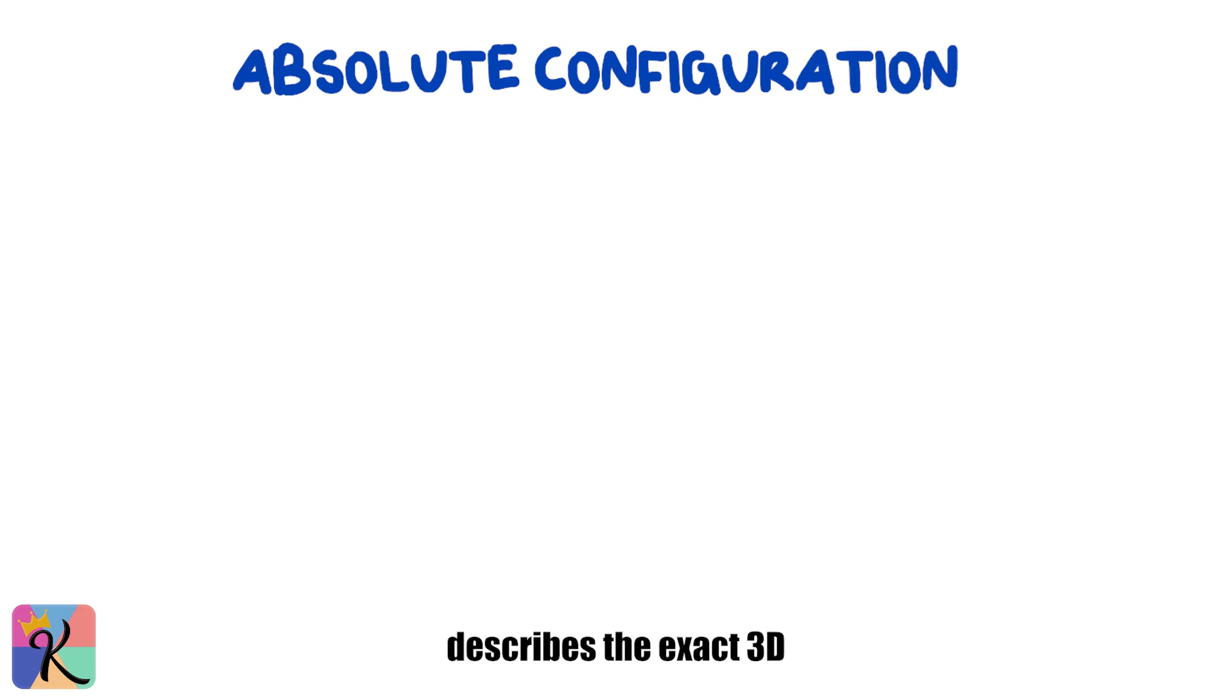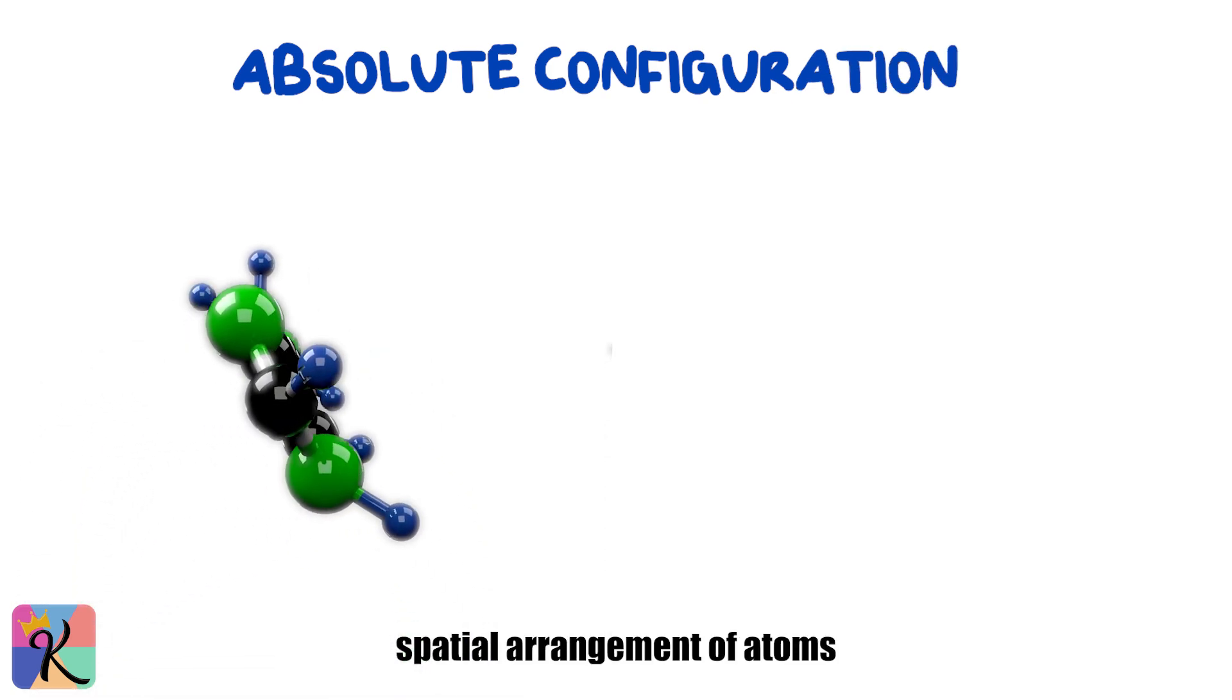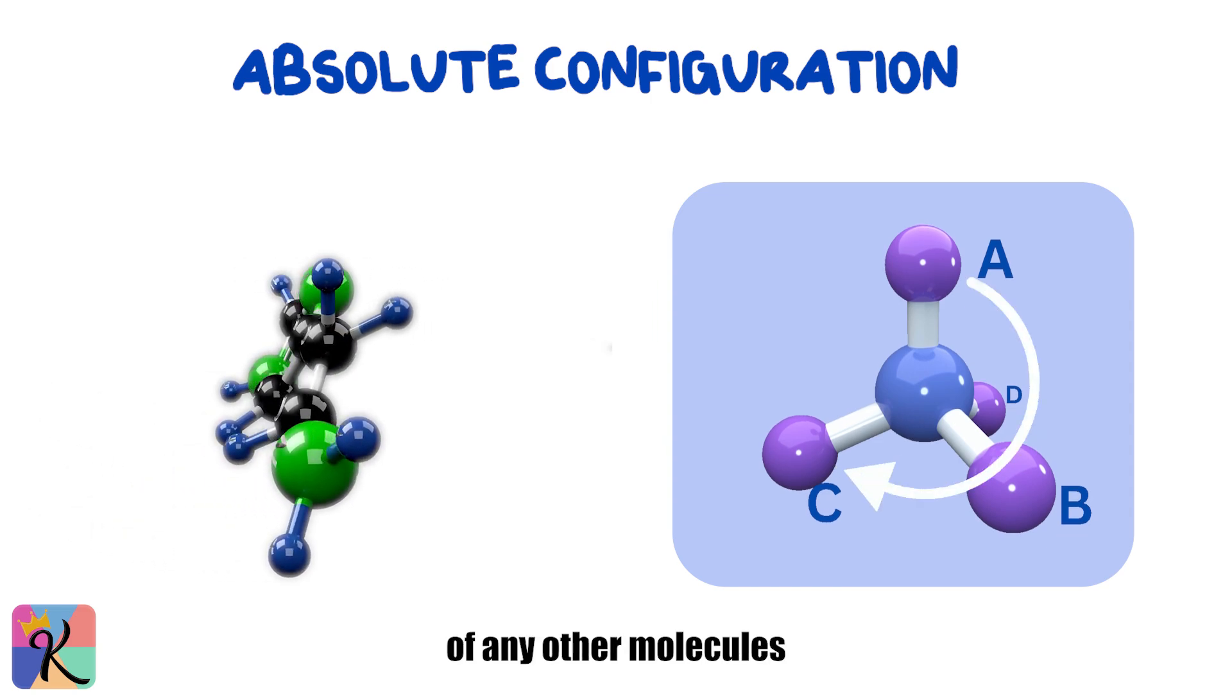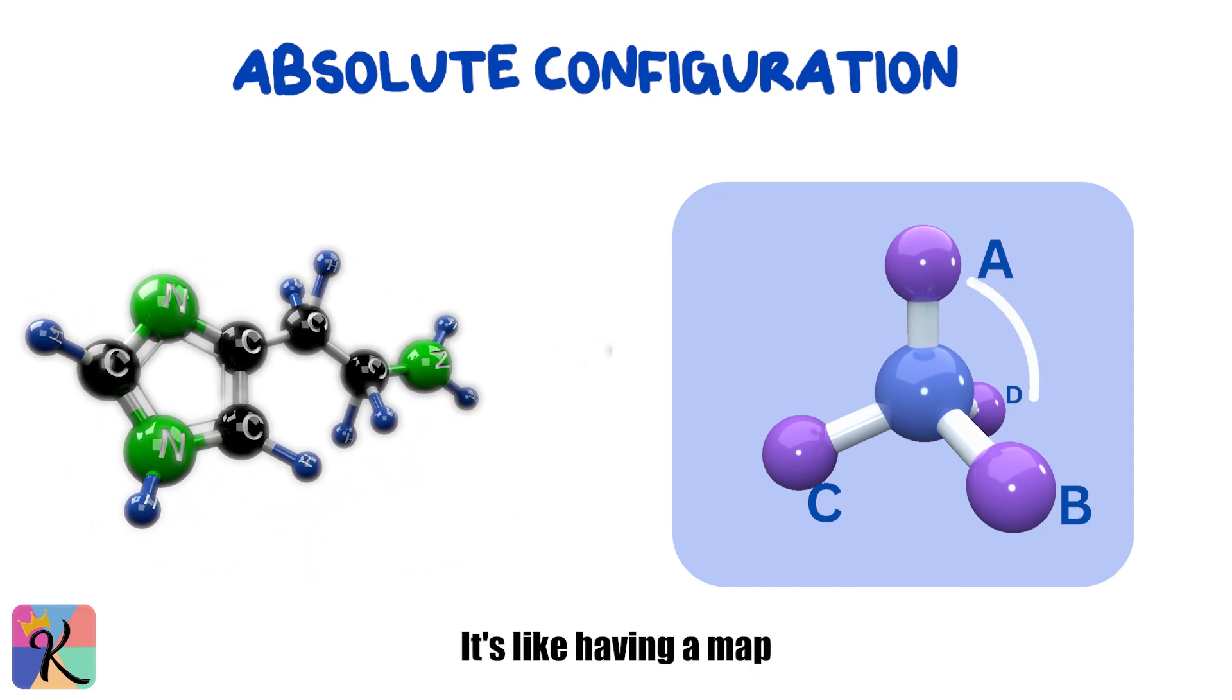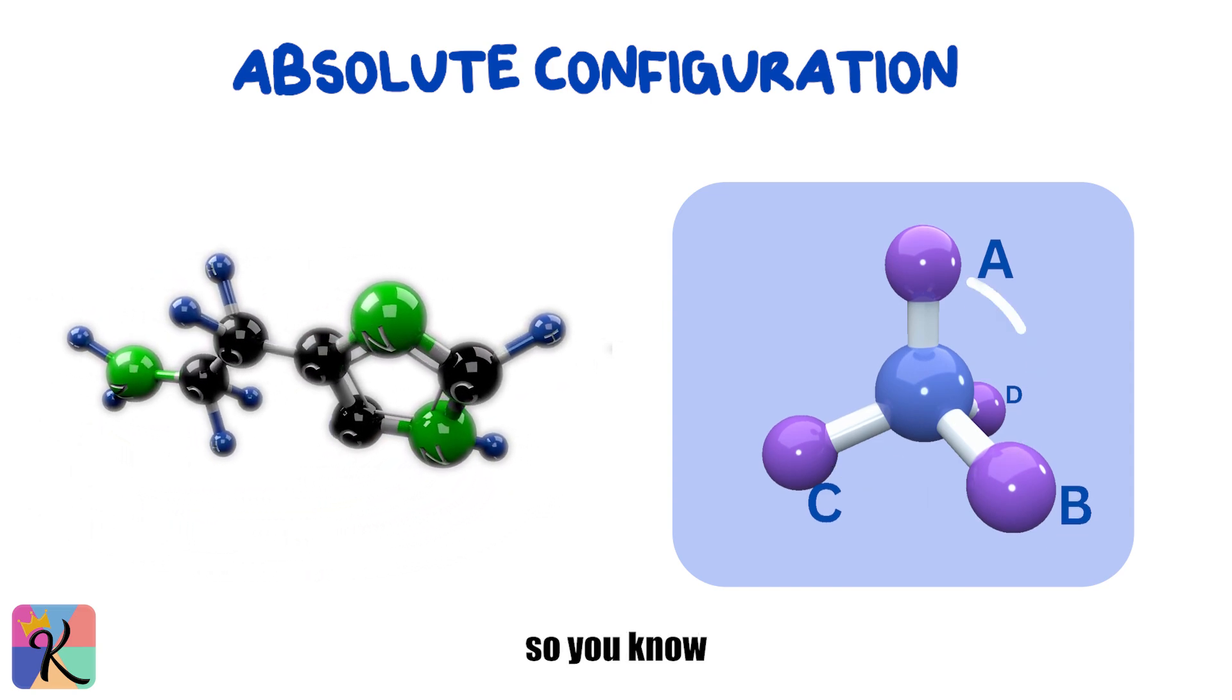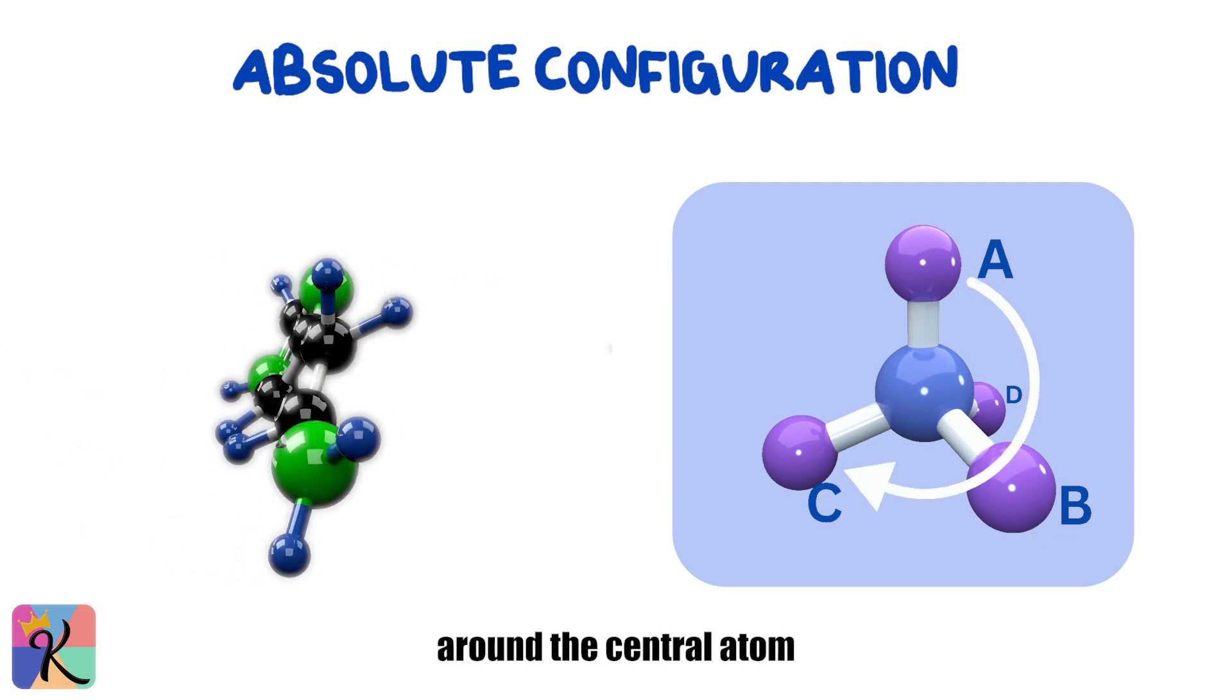On the other hand, absolute configuration describes the exact 3D spatial arrangement of atoms around a chiral center, independent of any other molecules.